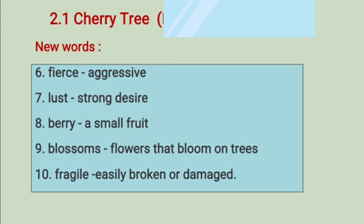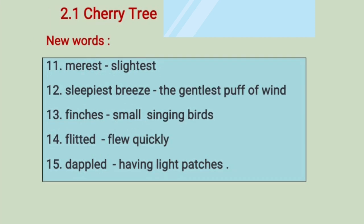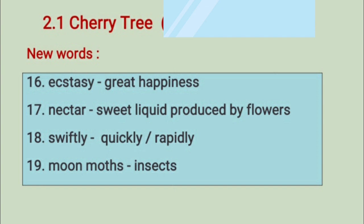Berry means a small fruit. Blossoms means flowers that bloom on trees. Fragile means easily broken or easily damaged. Merest means slightest. Sleepiest breeze means the gentlest puff of wind. Finches means small singing birds. Flitter means flew quickly. Dappled means having light patches. Ecstasy means the feeling of great happiness. Nectar means sweet liquid produced by flowers. Swiftly means quickly or rapidly. Moon moths means insects.